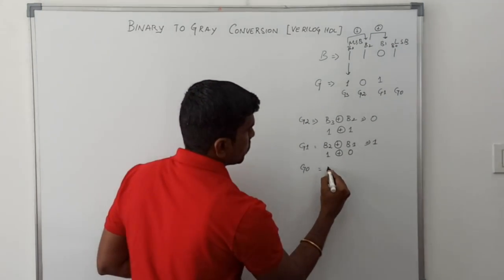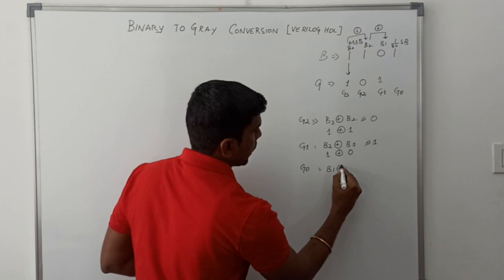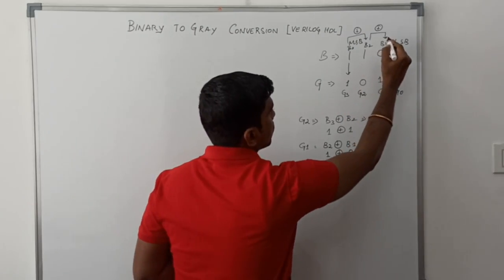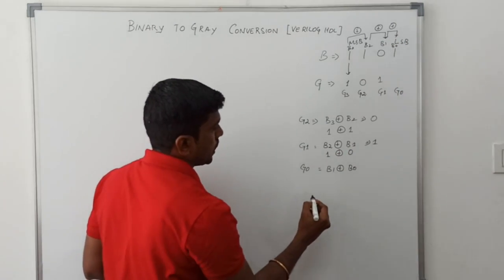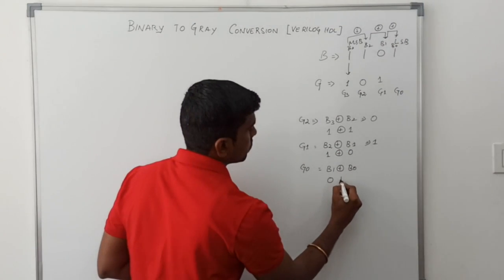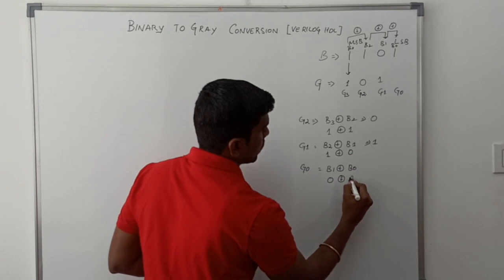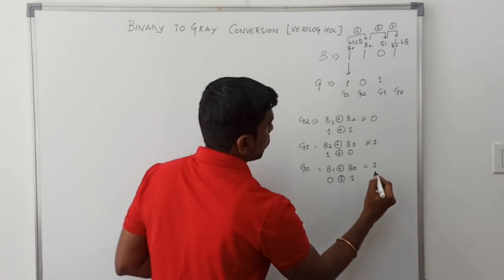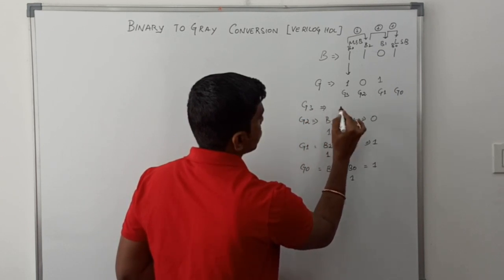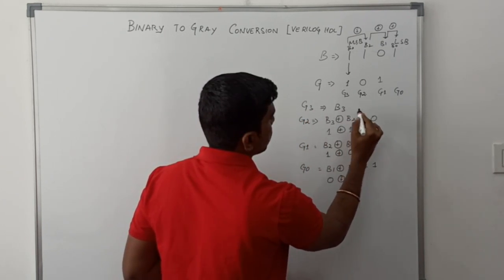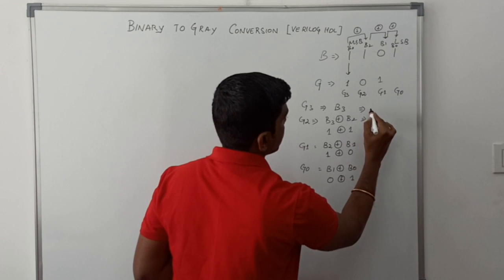Now for G0, we calculate B1 XOR B0. This B1 bit is XORed with B0 value. B1 value is 0, B0 value is 1, so the result is 1. And G3 equals B3, which is 1.